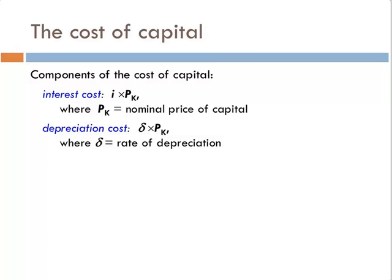This little squiggly symbol here is a script delta, and we'll use it throughout the class to represent the depreciation rate — what percentage of capital gets used up every period. If we buy a nominal amount of capital at price pK, that's one unit of capital at a nominal price of pK. How much will it cost us in depreciation every period? For each unit of capital, it costs us delta times pK — that's our depreciation cost.